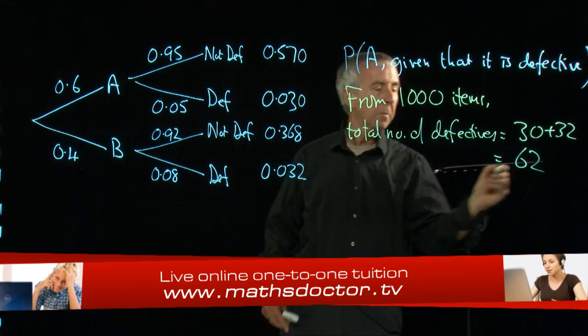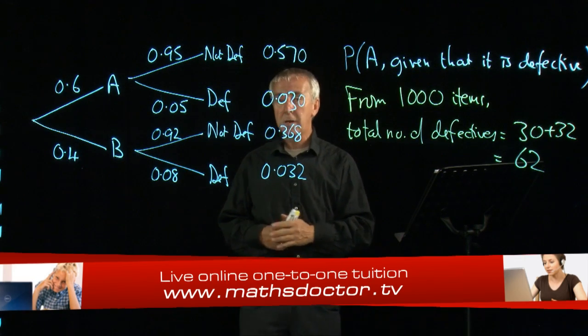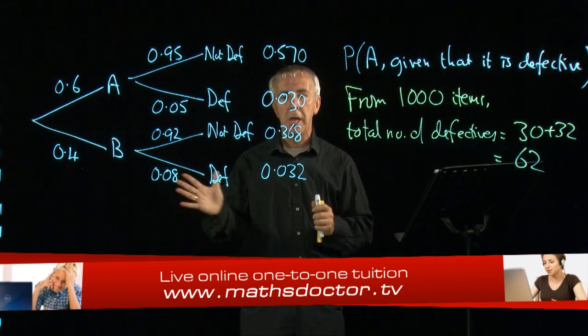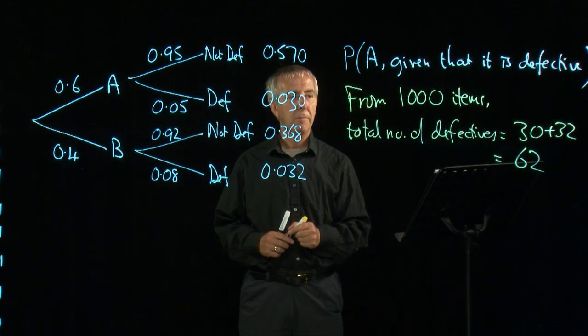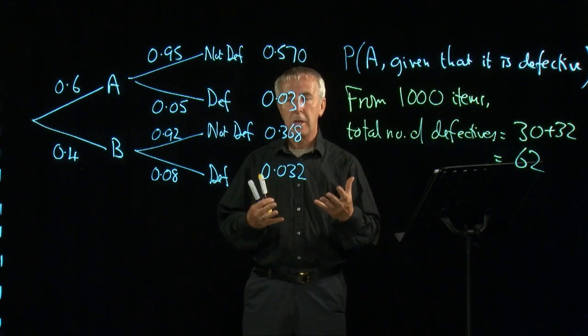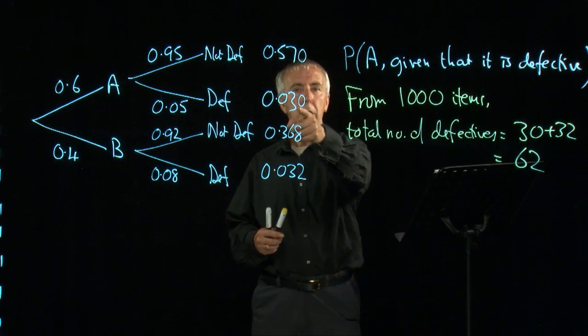So all together, there are 62 defectives on average. When we create 1,000 items in this machine, 62 will be defective. Out of those defectives, how many came from A? 30.